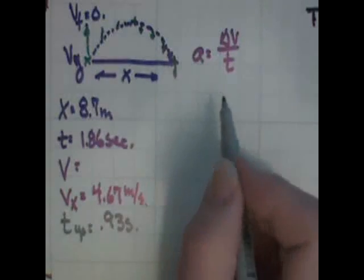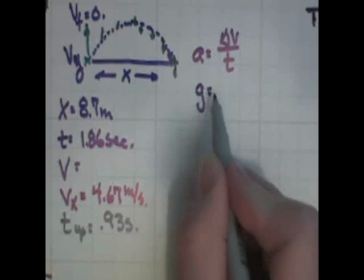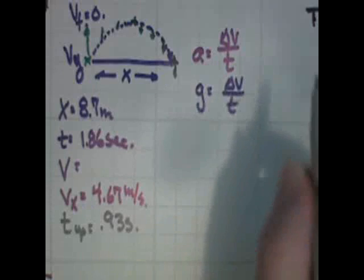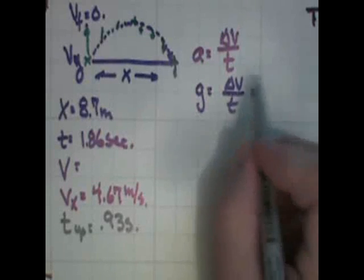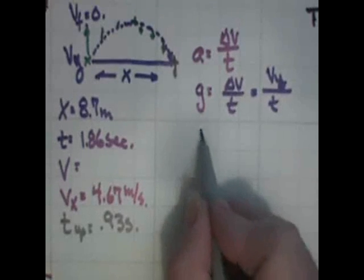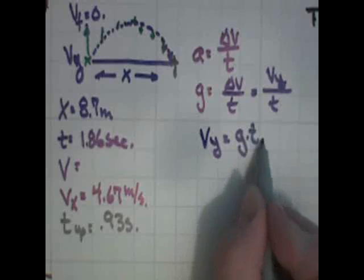So I can say that my acceleration due to gravity is equal to my change in velocity divided by time. But then I can rewrite that as acceleration due to gravity is equal to my initial velocity in the y-direction divided by time, which tells me my initial velocity in the y-direction is acceleration due to gravity times time.